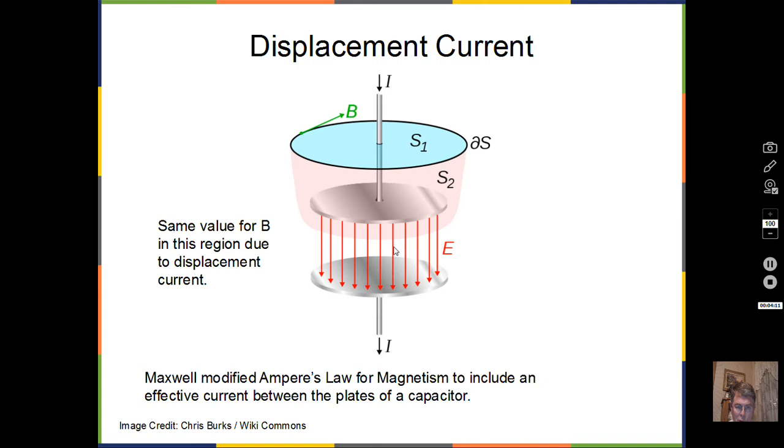A capacitor has an insulator between the two plates, so there is not this conventional current. Maxwell realized it would be very strange for us to predict magnetic field right here but then here not have a magnetic field. And that is the case with the standard Ampere's Law. So Maxwell modified this law to take into account an effective current called the displacement current.